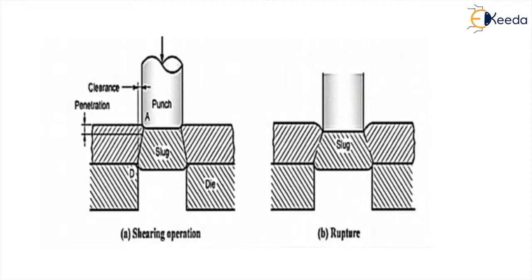By the time the punch moves further, the difference between elastic compression and elastic elongation is much higher. The stresses induced in the sheet material go beyond the ultimate shear strength of the material — the material is going to crack or shear. The crack is going to appear, starting from corner A of the punch and corner D of the die.